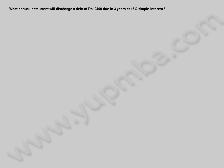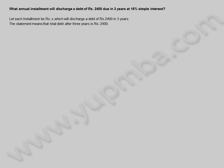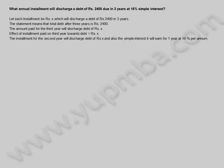Let us see another example. What annual installment will discharge a debt of 2,400 rupees due in three years at 16% simple interest? Let each installment be X rupees, which will discharge a debt of 2,400 rupees in three years. The total debt after three years is 2,400 rupees. The effect of the installment paid in the 3rd year is X rupees. The 2nd year installment discharges X rupees plus simple interest earned for one year at 16% per annum.